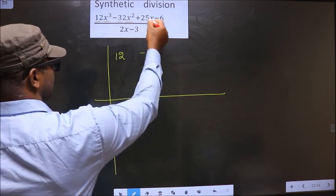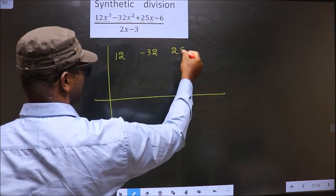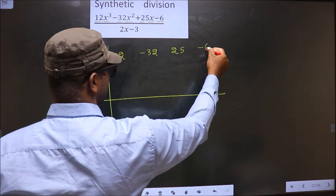Next, x coefficient, that is 25. And finally the constant, that is minus 6.